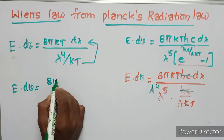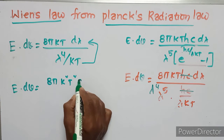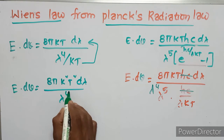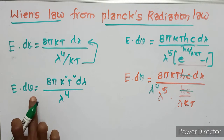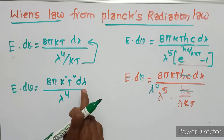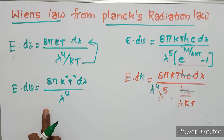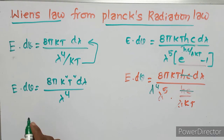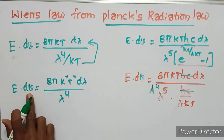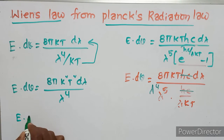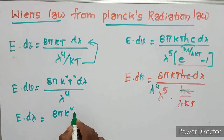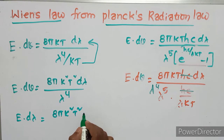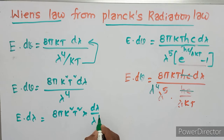Expressing in terms of d_lambda, E·d_nu equals 8·pi·k-squared·T-squared·d_lambda divided by lambda to the power of 4.